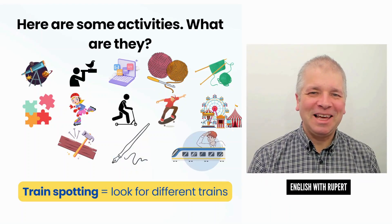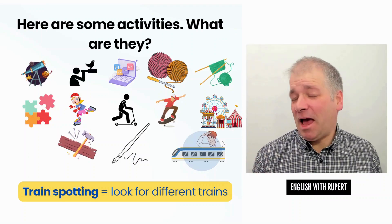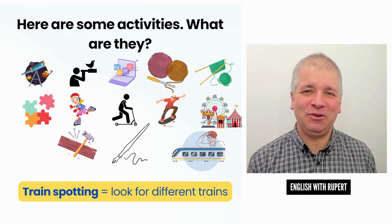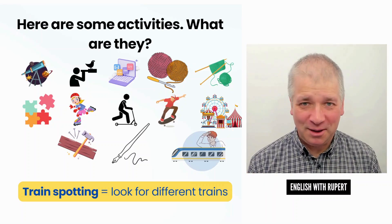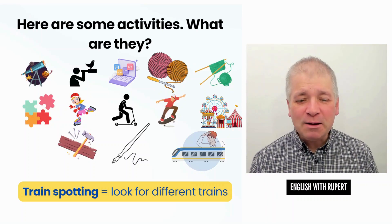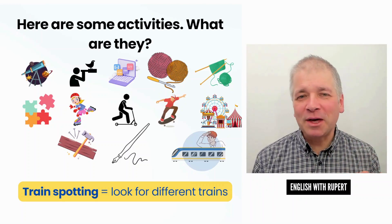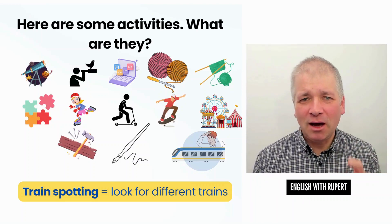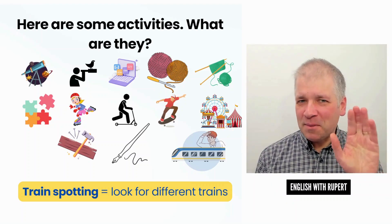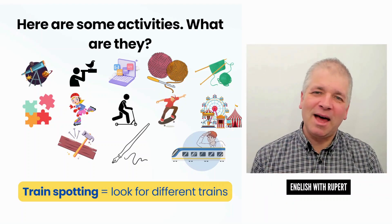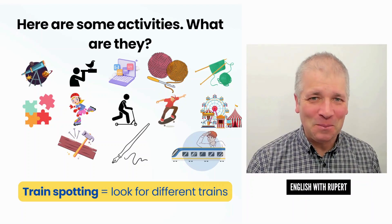Finally, in some countries, there's an activity called train spotting. If you are a train spotter, you enjoy looking for different trains. You'll travel around the country thinking, 'I need to see this particular train,' and you'll try to spot as many different trains as you can. It's a popular activity for some.